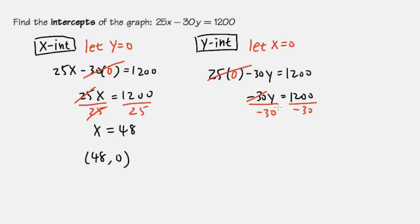So this negative 30 and this negative 30 will cancel each other. And then we will have y equals 1200 divided by negative 30. That gives us negative 40.